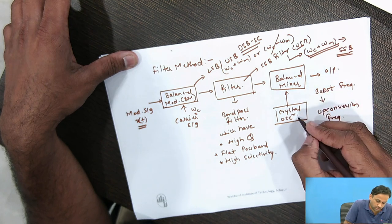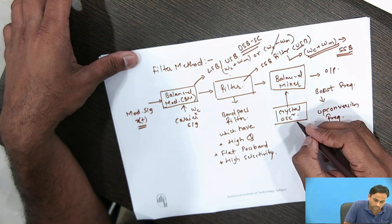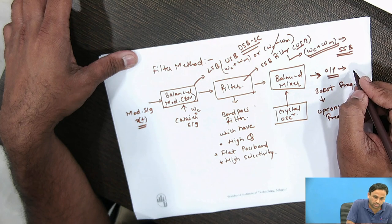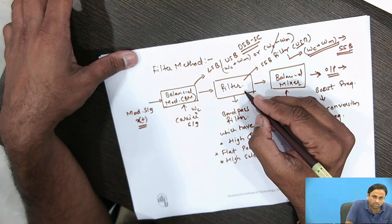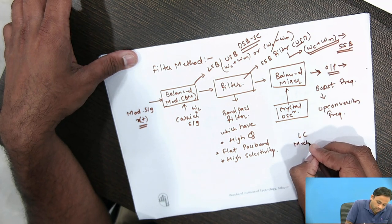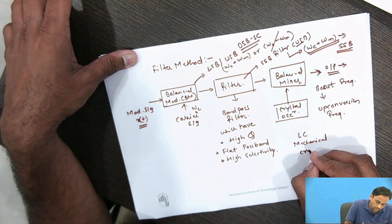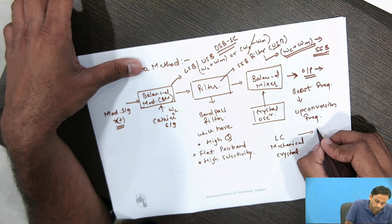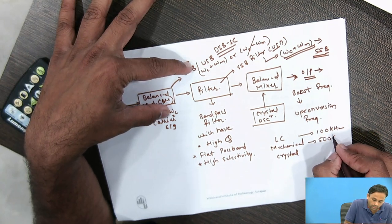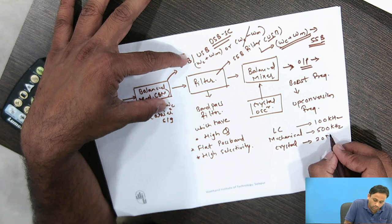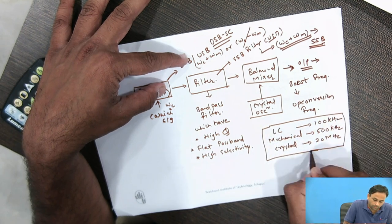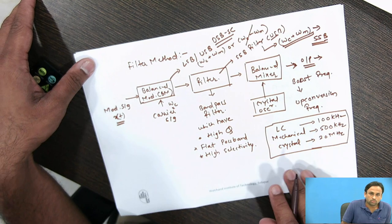The up-conversion is done using the balanced mixer and crystal oscillator, and then the signal is transmitted at the transmitter output. There are three types of filters used in this method: LC filters, which support up to 100 kHz; mechanical filters, which support up to 500 kHz; and crystal filters, which support up to 20 MHz.